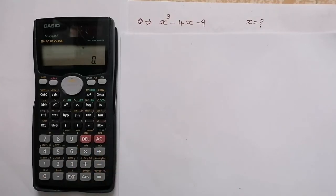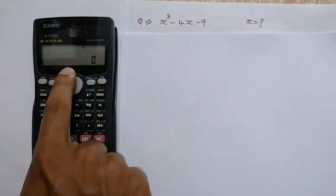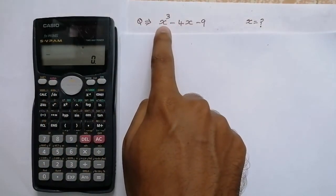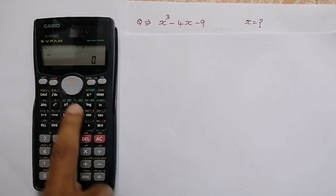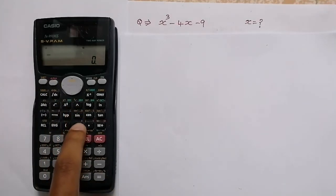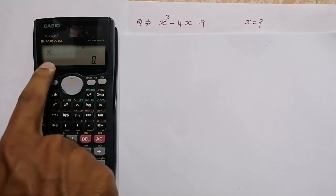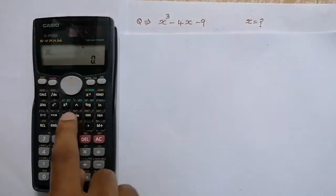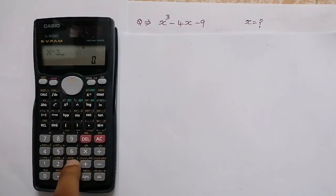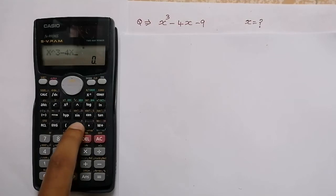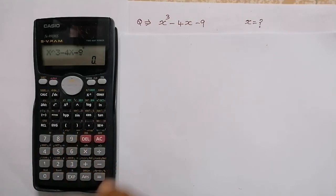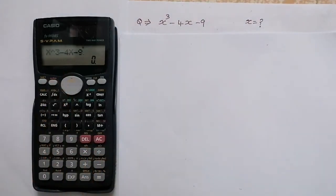Now we are going to type this equation into the calculator. To type the letter X, press the Alpha button near the Shift button. Above the closing bracket button you can see the variable X, so press that to get X. Now press the arrow then press 3 to get X cube, then minus 4, then Alpha and closing bracket to get 4X, minus 9. Now we have written the equation X³ - 4X - 9 in the calculator.